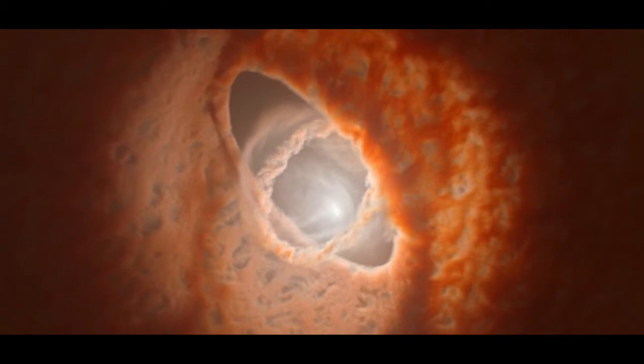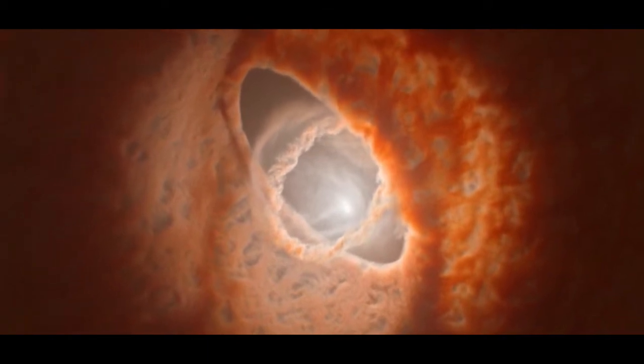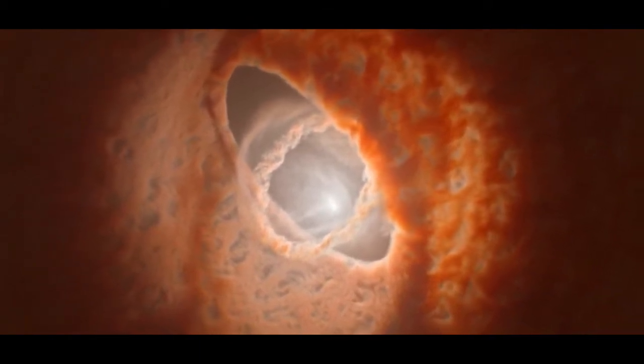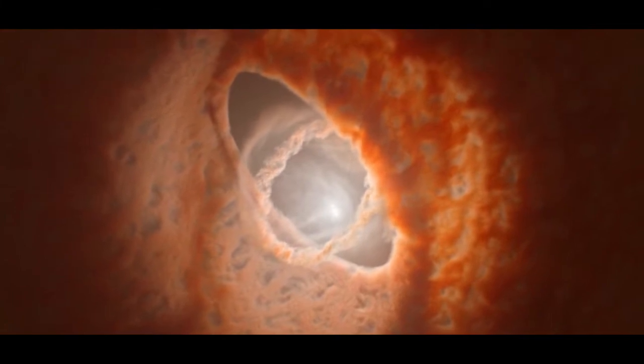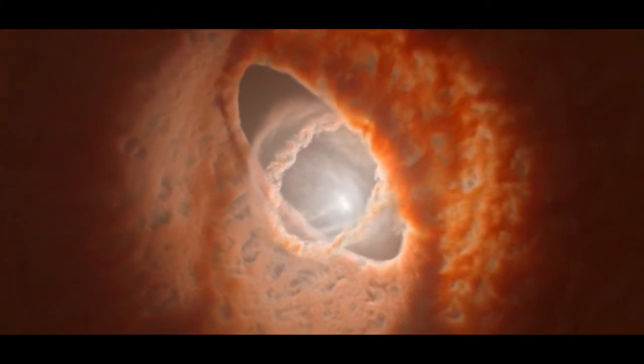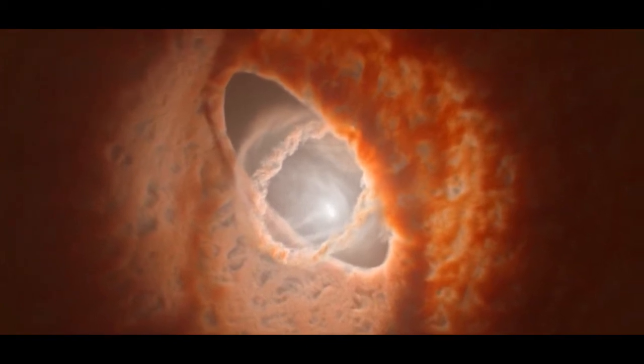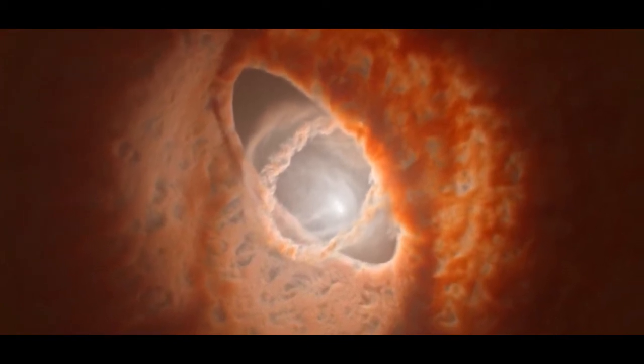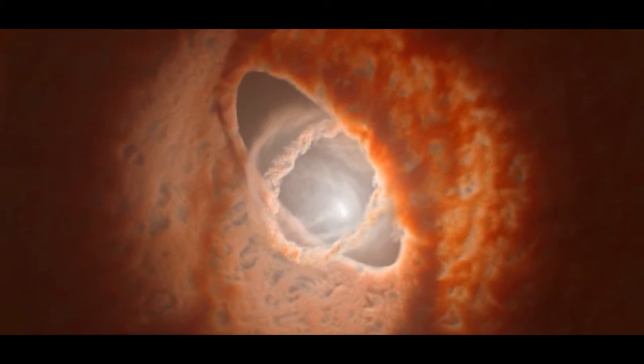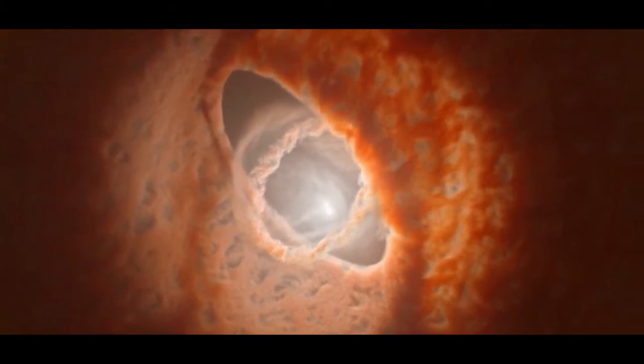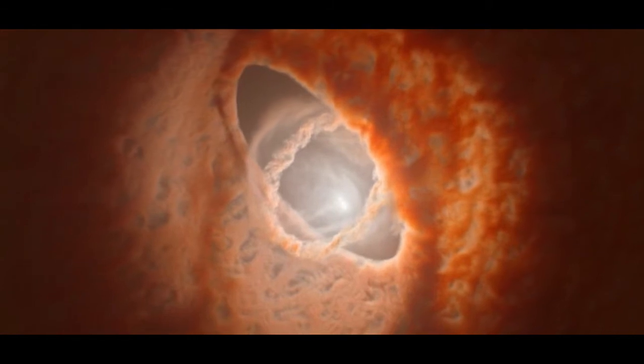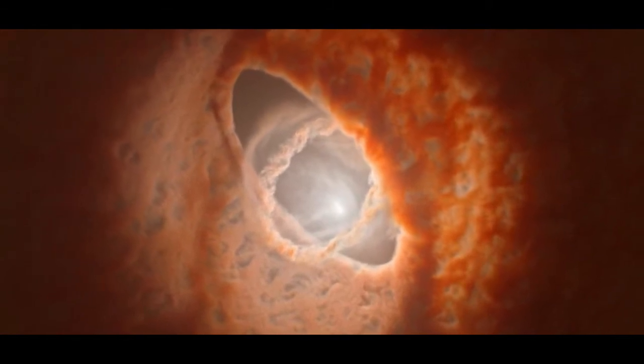The star system, known as GW Orionis and located about 1,300 light-years from Earth, makes a tempting target for study. With three dusty, orange rings nested inside one another, the system literally looks like a giant bullseye in the sky. At the center of that bullseye are three stars, two locked in a tight binary orbit with each other, and a third swirling widely around the other two.